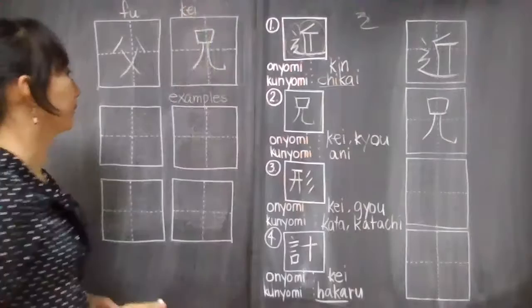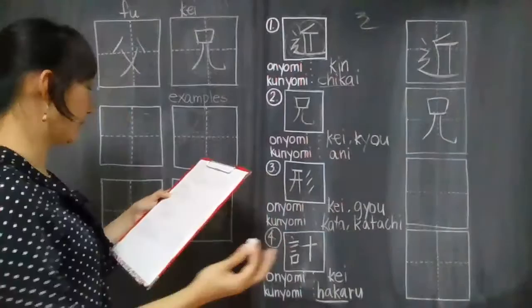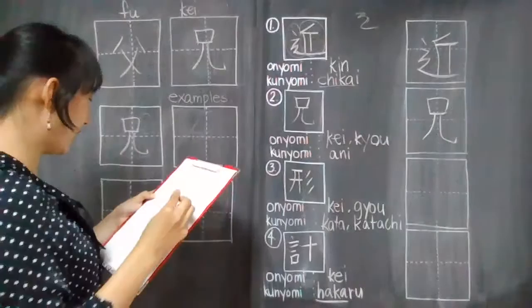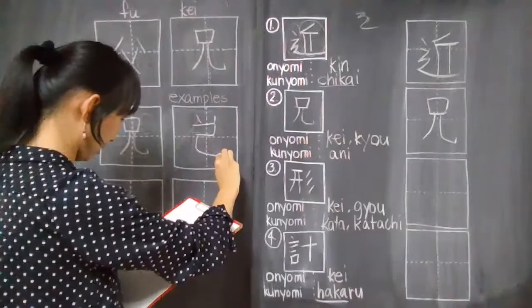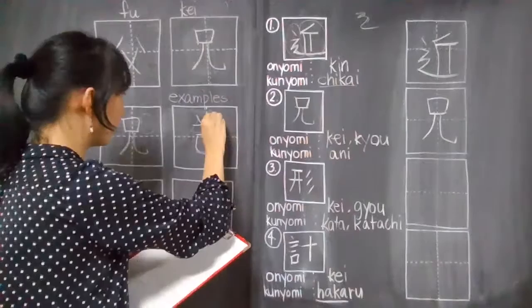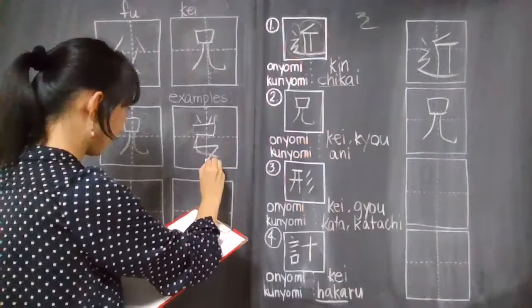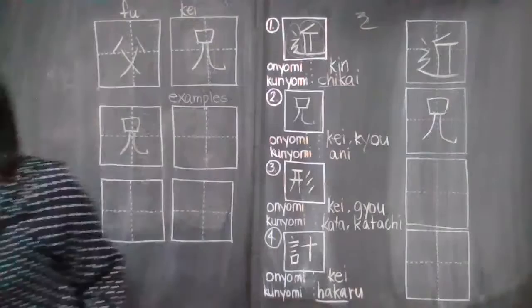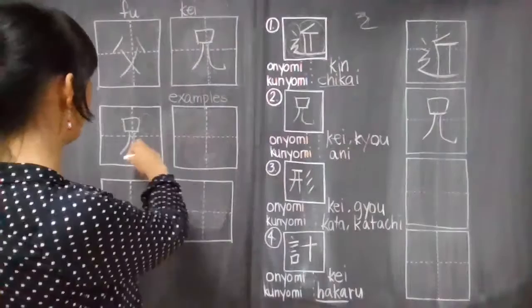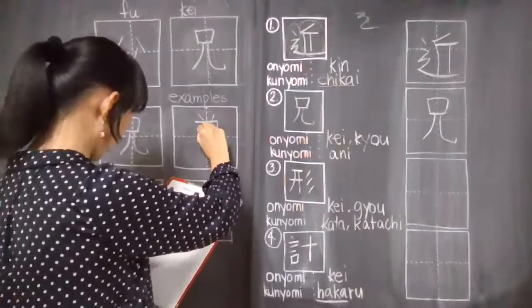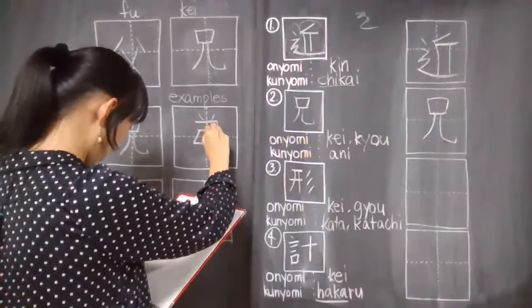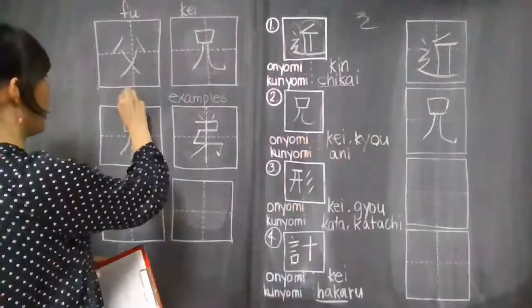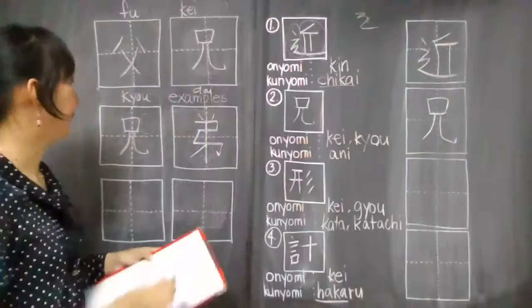The next example is kyodai. Kyodai means siblings or sibling. So kyo, this is kyo and then dai is a bit difficult. This one is a bit difficult to write. I think this kanji is 3-nensei no kanji, third grade kanji, this dai no, kyodai no kanji.